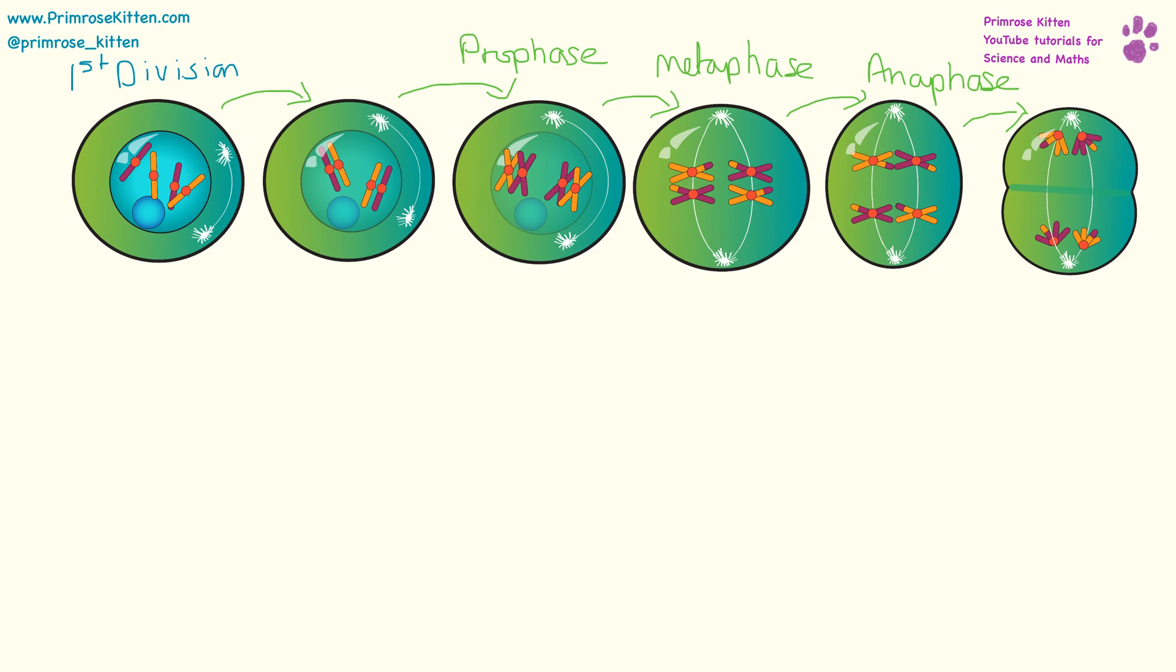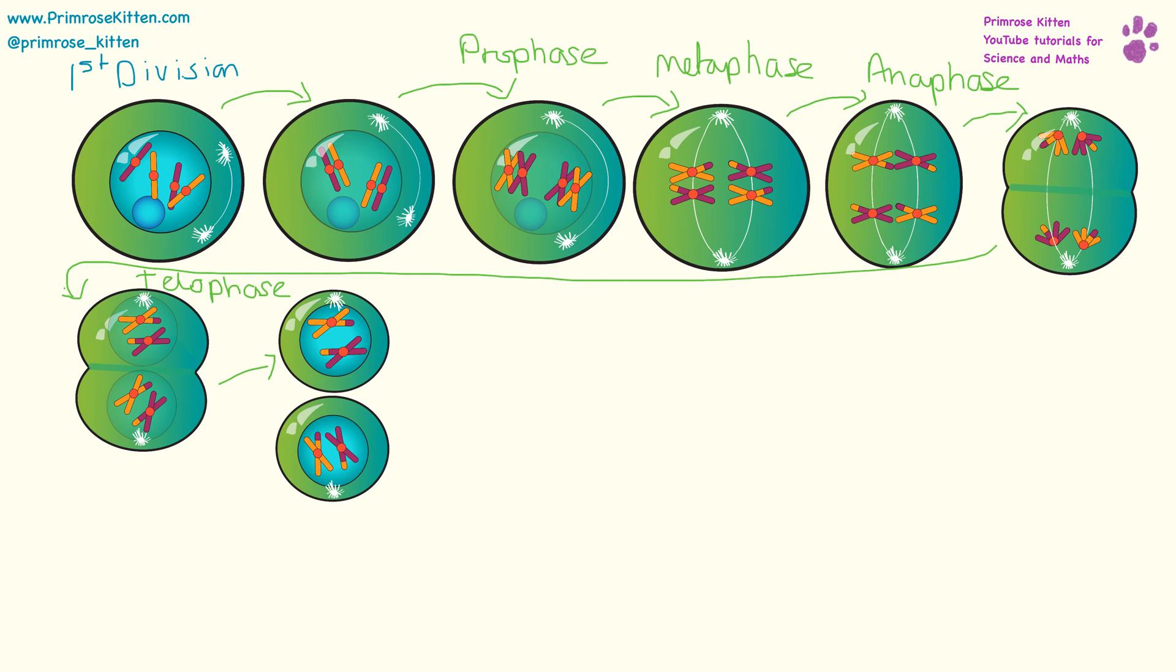This will then start to separate out into two new cells. The spindle that pulled them apart is going to disassemble, and we're going to get two new cells formed. Each cell is only going to have one copy of each chromosome. Some of these chromosomes are going to be from the mother, and some are going to be from the father.